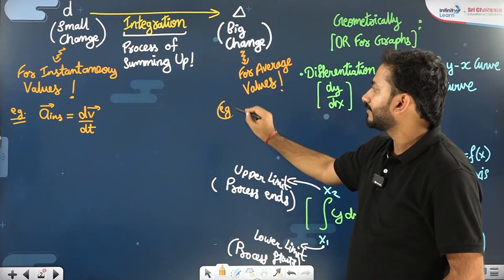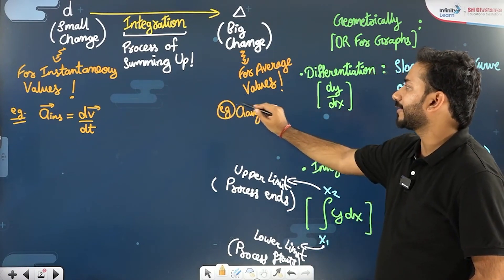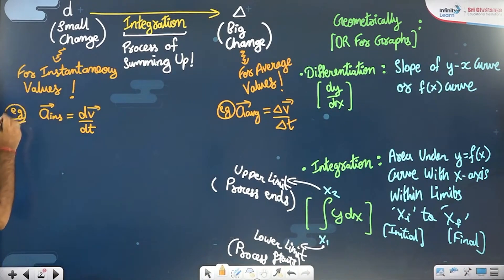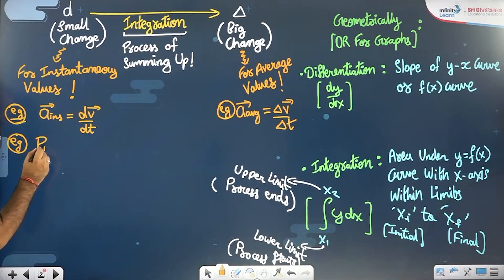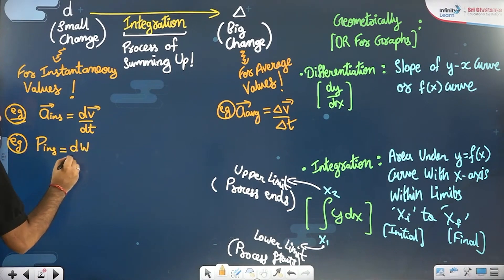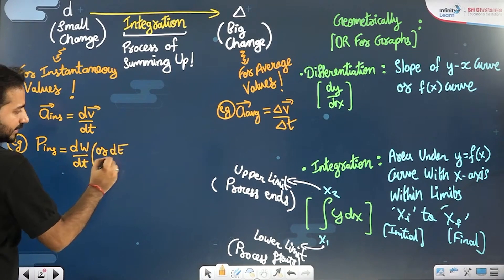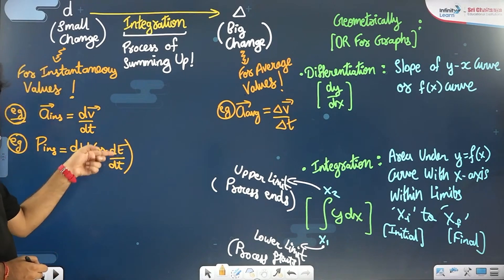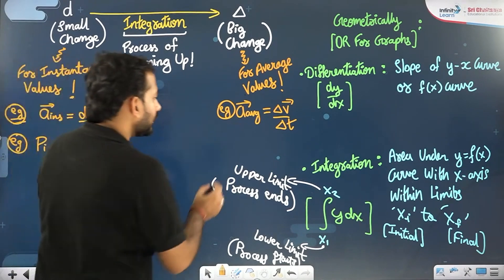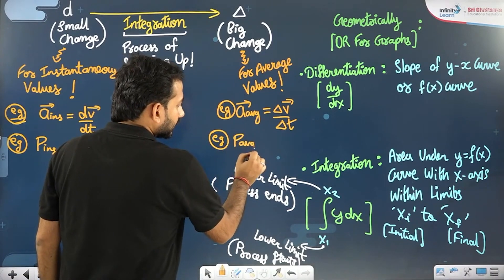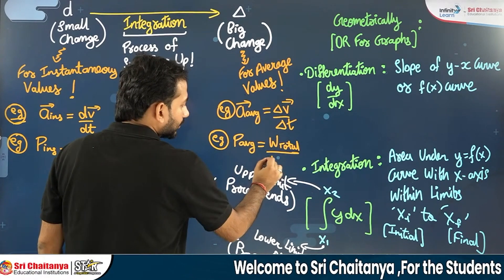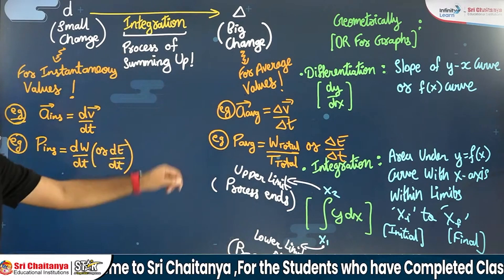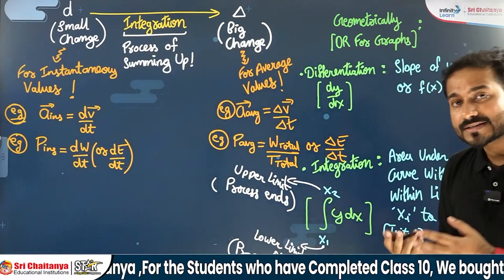For example, average acceleration vector equals delta v vector by delta t. Suppose someone is asking instantaneous power — that will be dW by dt or dE by dt, which is the rate of doing work. Similarly, if someone is asking average power, then you say W total by t total, or delta E by delta t. So big changes are required for average values and small changes are required for instantaneous values.